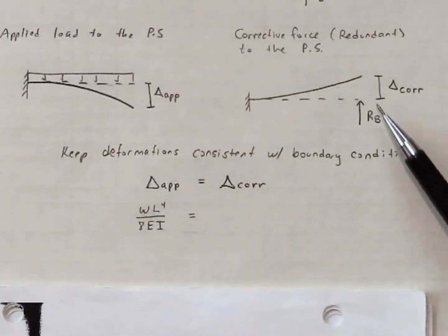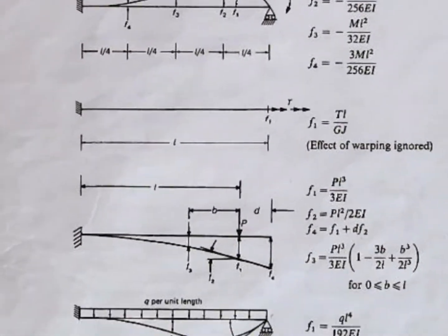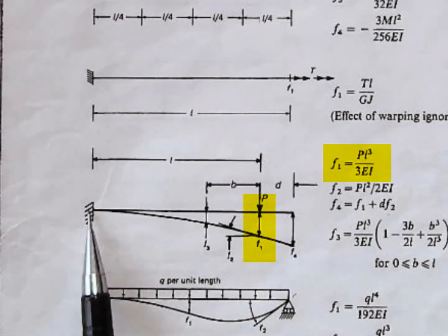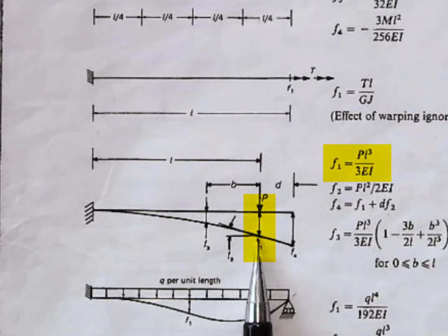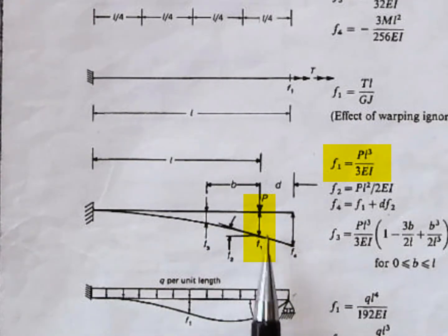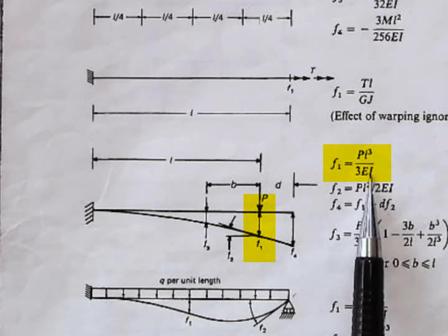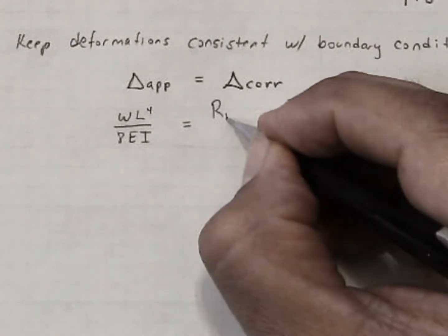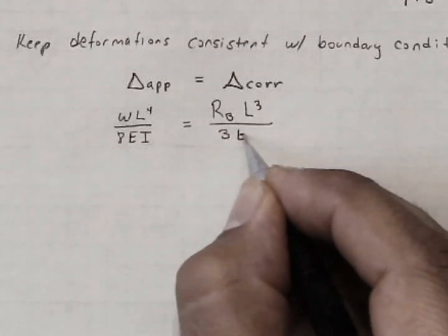Now we're interested in the second deflection, a cantilever beam with a point load. And that one's found over here. Here's a cantilever beam, point load P, the deflection at the location of the point load is what we're interested in. This particular table allows the point load to not be at the end of the beam. But L is given at the location of the point load. The deflection F1 is PL cubed over 3EI. So we'll write then the force P is R sub B L cubed over 3EI.